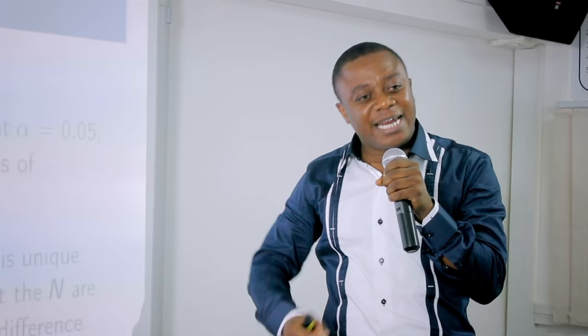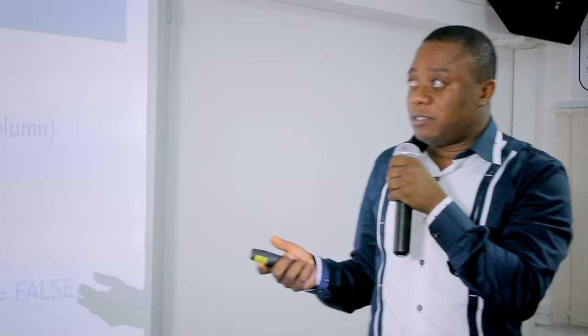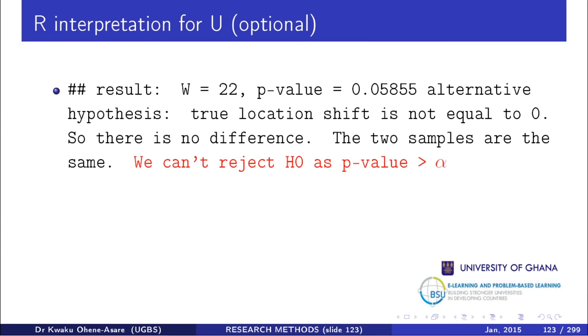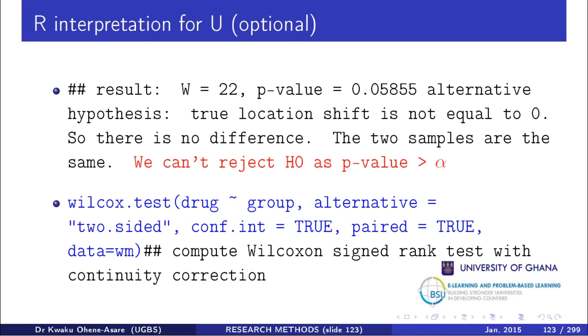This is the Mann-Whitney U test, also known as the Wilcoxon rank-sum test — it is not trivial. Read it, understand it, and go over it repeatedly. Optionally, you can look at how this works in R — the computer will give you the same results and conclusions.